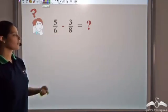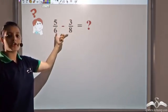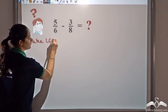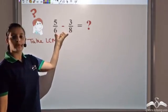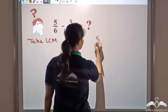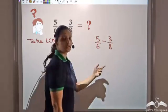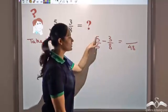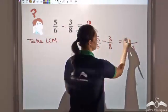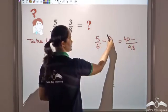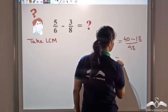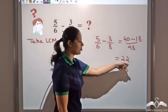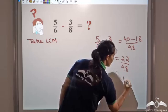Now let's solve 5/6 minus 3/8. Using the shortcut: multiply the denominators — 6 times 8 is 48, that is the denominator. Cross multiply and subtract: 5 times 8 is 40, minus 6 times 3 is 18. So 40 minus 18 is 22/48. Dividing both numerator and denominator by 2 gives 11/24.